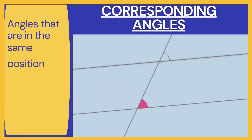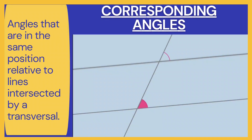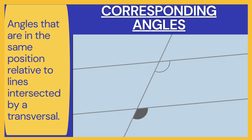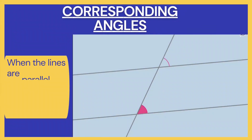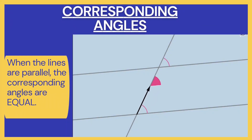Now, talking about parallel lines, the first set of angles is corresponding angles. When a transversal cuts across two parallel lines, there are eight angles created — four at each intersection. We can consider these in corresponding pairs of angles, with one at each junction. There are four such pairs: top left, bottom left, bottom right, and top right. When the lines are parallel, the corresponding angles are equal. One very important point to note is that the pair of corresponding angles must be present on the same side of the transversal.